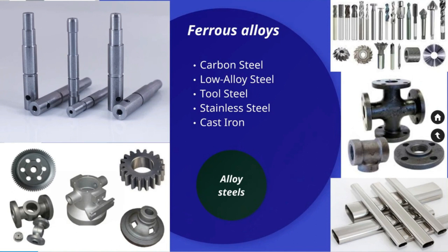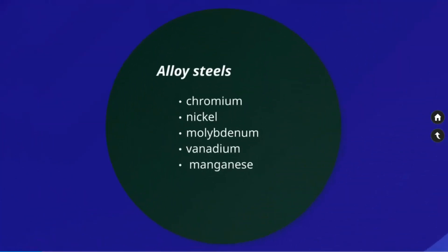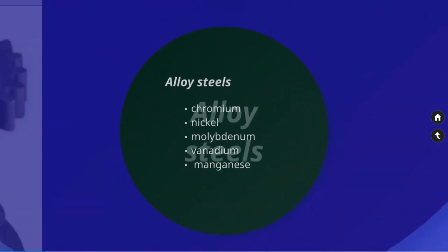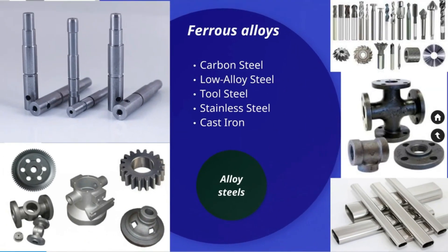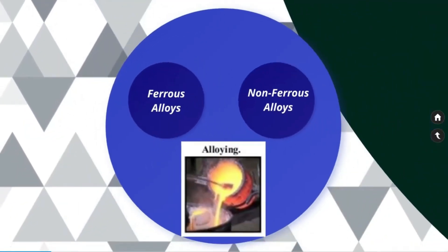Alloy steels are also made in multiple forms such as chromium, nickel, molybdenum, vanadium, manganese, etc. The use of material varies based on the application.